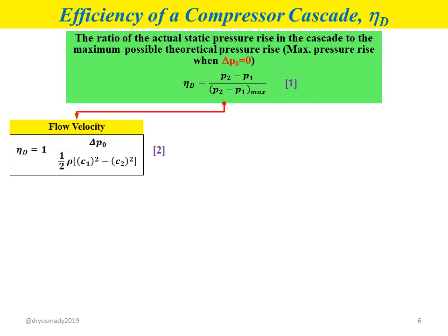If the equation is based on flow velocity, we have Equation 2, where mu_d equals one minus delta p0 divided by half rho multiplied by (c1 squared minus c2 squared), where c1 is the inlet flow velocity and c2 is the outlet flow velocity.